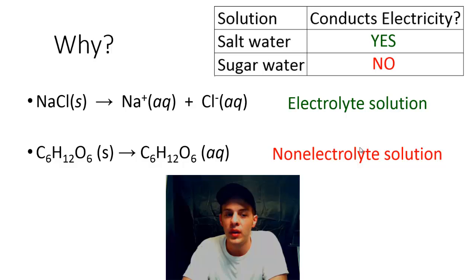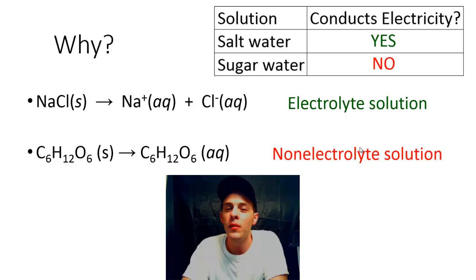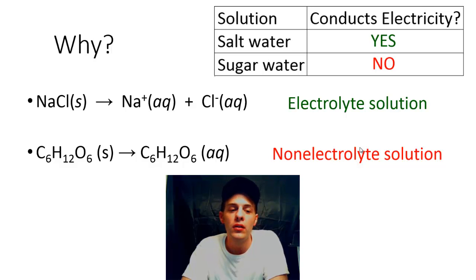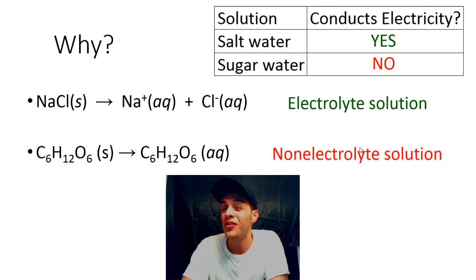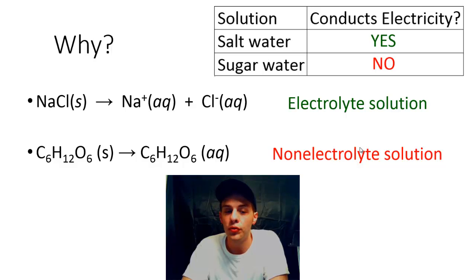This is what we call a non-electrolyte solution. We can see that ionic compounds, when they dissolve in water, release ions and make electrolytes — just like sodium chloride. When molecular compounds such as glucose dissolve in water, they don't make ions, and so you get a non-electrolyte solution.